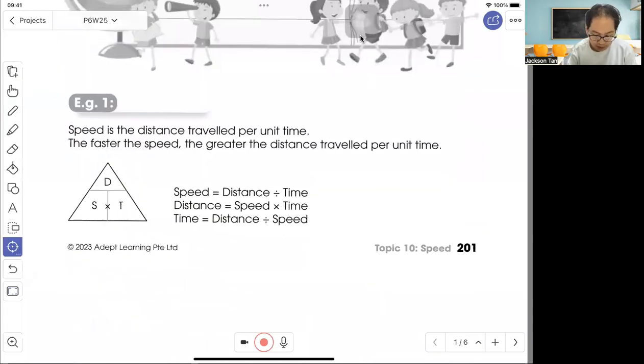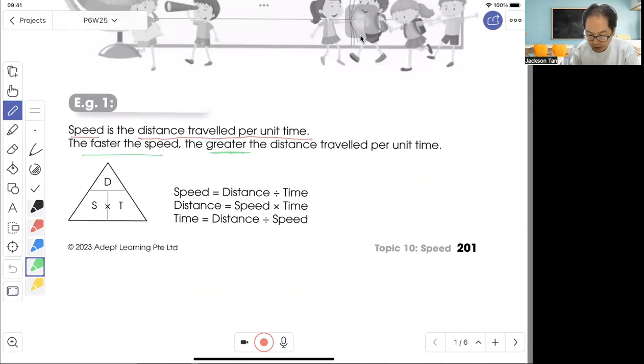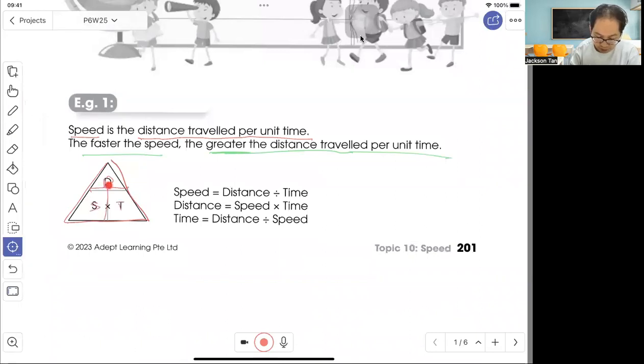Speed is the distance traveled per unit time. The faster the speed means the greater the distance traveled per unit time. So here is a formula, draw a triangle, speed into three parts: D, S, T. D stands for distance, S stands for speed, T stands for time.